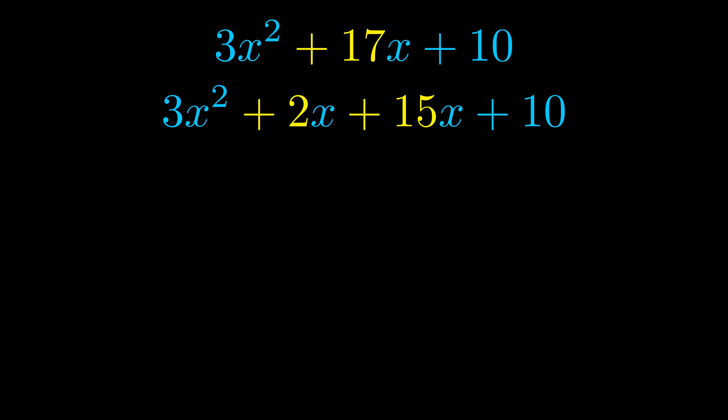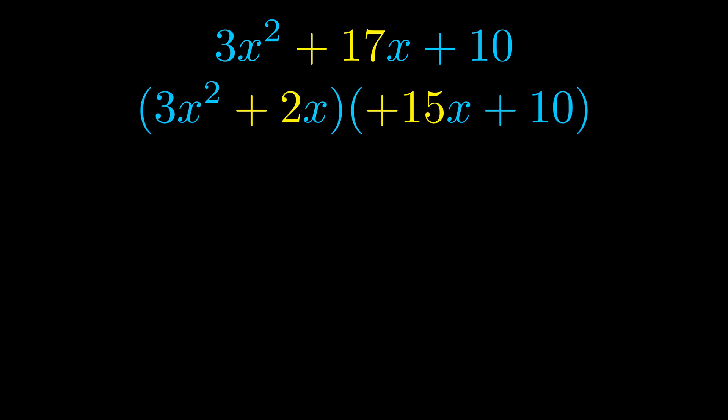Once we've done this we go ahead and we put parentheses around the first term and the last term. And we do that so that we can take the greatest common factor out of both terms. We can see the greatest common factor is now outside in green. Notice also how what remains inside of the parentheses is the same in both cases.